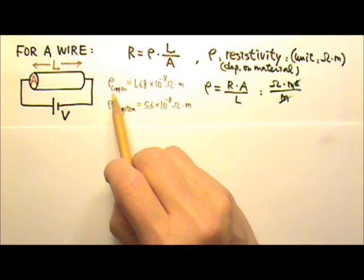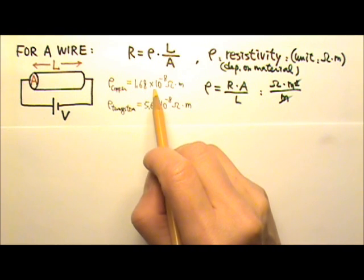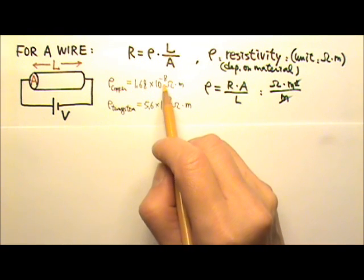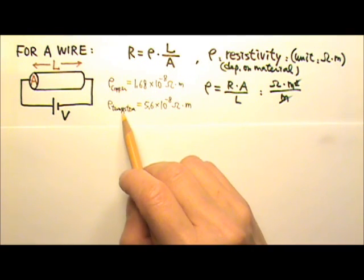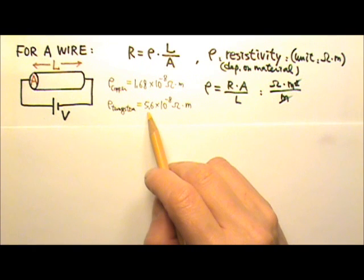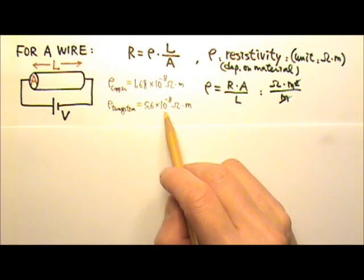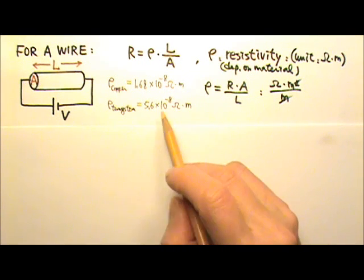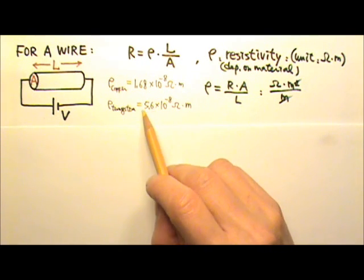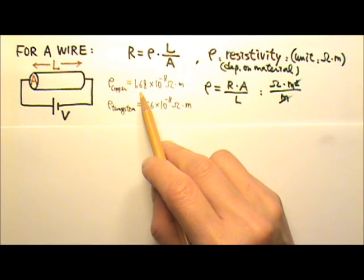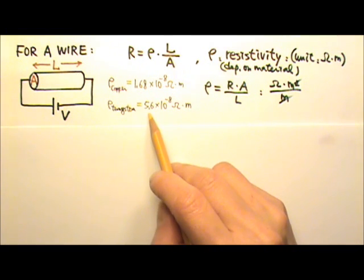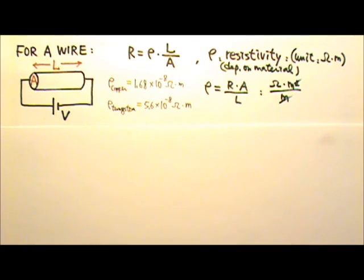For example, the resistivity of copper is 1.68 times 10 to the negative 8 ohm·meters. The resistivity of tungsten is 5.6 times 10 to the negative 8 ohm·meters. The resistivity of tungsten is bigger than that of copper, so tungsten is not as good a conductor as copper.